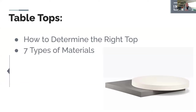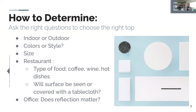Generally speaking, we divide tabletops into major categories - seven types of materials that we work with, and we'll get into that as we go down the list. When we start talking about tops, the first consideration is indoor versus outdoor. What application are we applying?